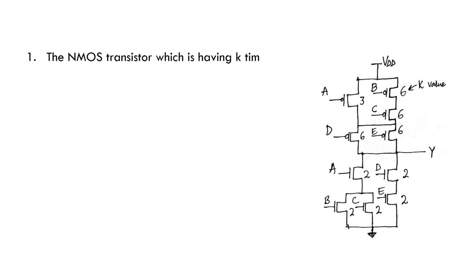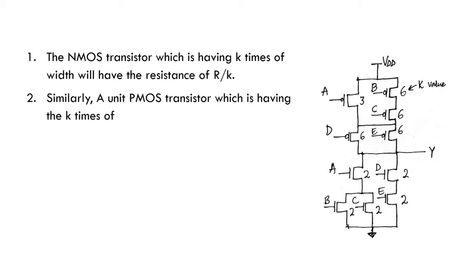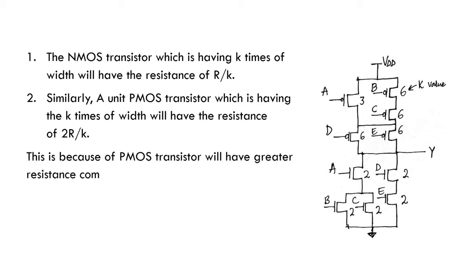The NMOS transistor which is having K times of width will have the resistance of R/K. Similarly, a unit PMOS transistor which is having K times of width will have the resistance of 2R/K. This is because the PMOS transistor will have greater resistance compared to the NMOS transistor because its mobility is less. The value of R will be typically on the order of 10 kilo-ohms for a single transistor.